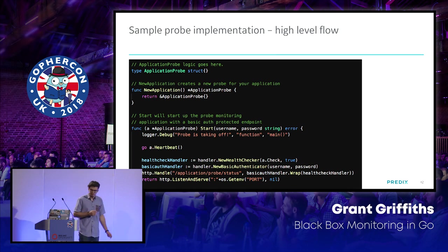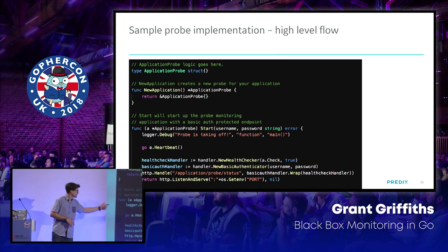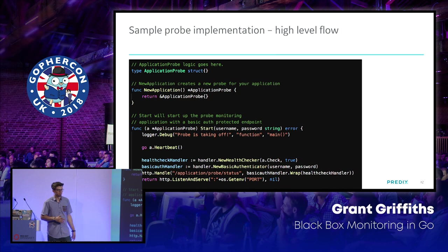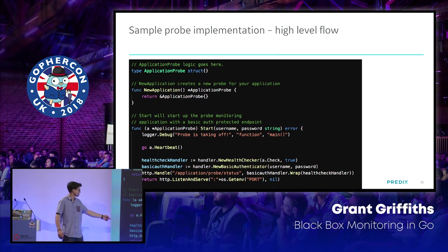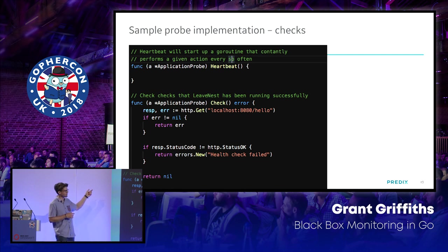Here's the implementation of that probe for our simple hello world endpoint. We create a new application probe with nothing unique to fill in. In the Start function, we kick off the probe, and in a separate Go routine, we start the Heartbeat function which continuously does something. For our simple service, Heartbeat doesn't need to do anything — the check just verifies the endpoint is up. We also set up the application probe status endpoint, which checks whether the monitored service is up when hit.